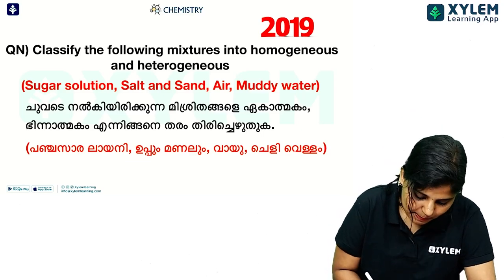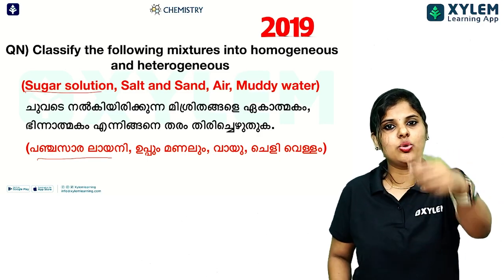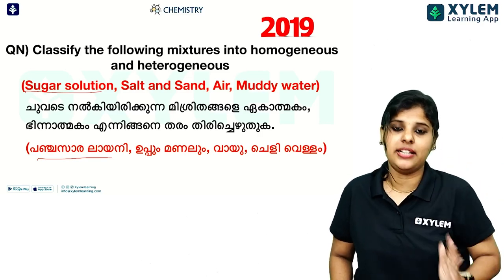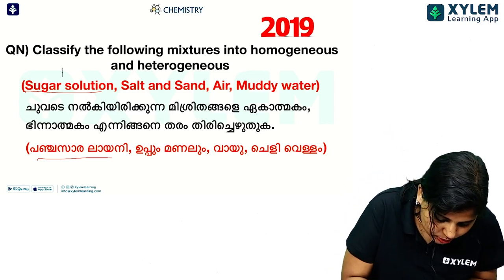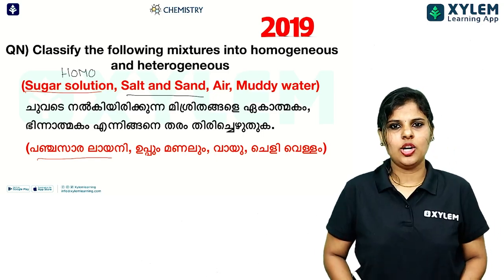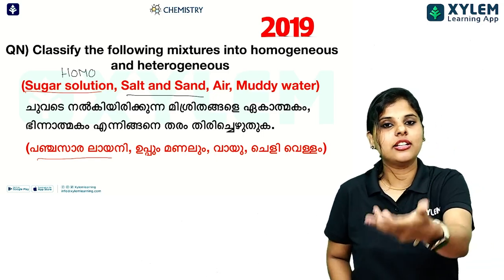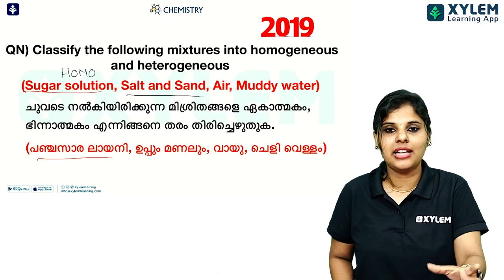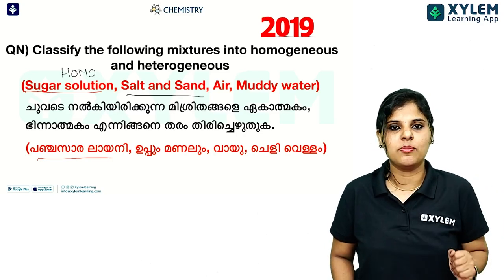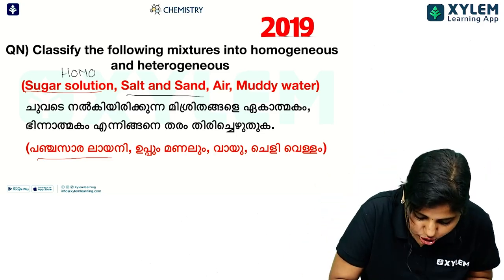Homogeneous and heterogeneous — five things. Sugar solution: you can use sugar uniformly dissolved, so sugar solution is a homogeneous mixture. Salt and sand: salt and sand are different substances mixed together, so it is a heterogeneous mixture.